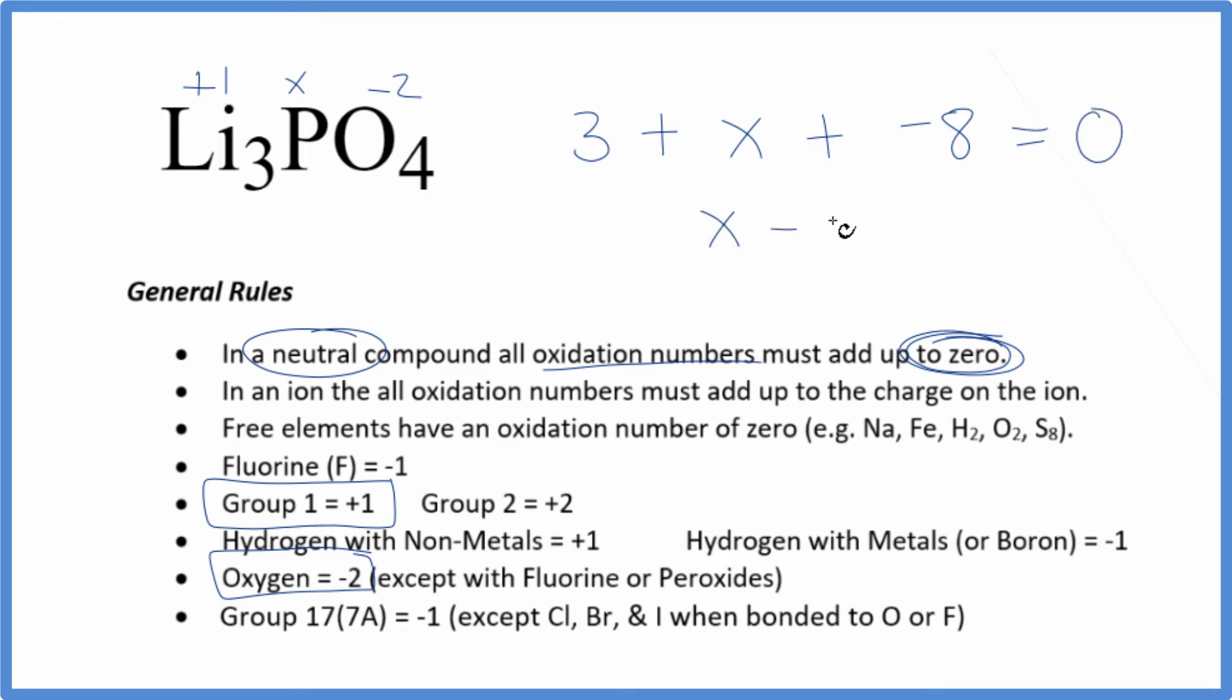So X minus five equals zero. Add five to both sides, and X equals positive five.